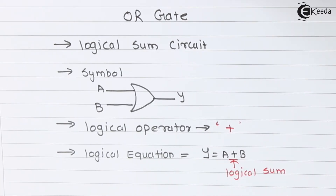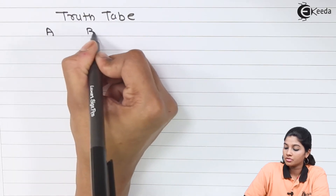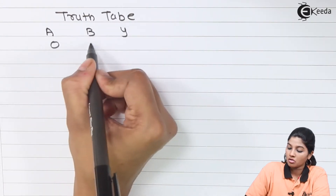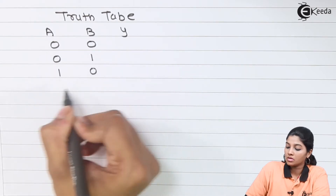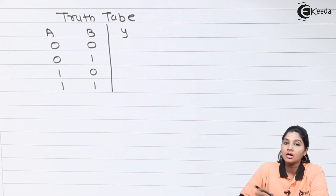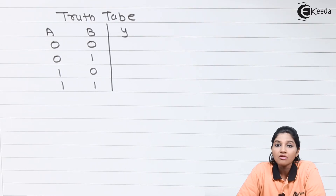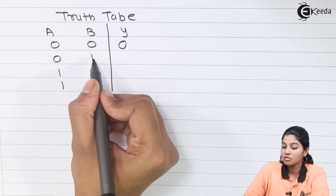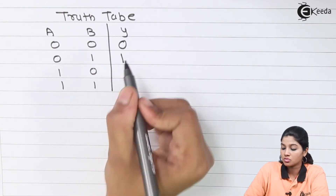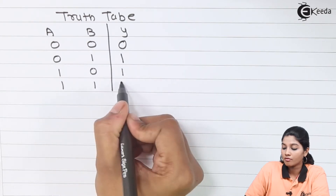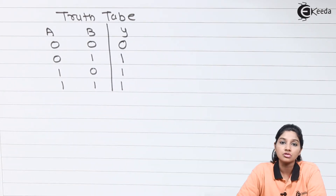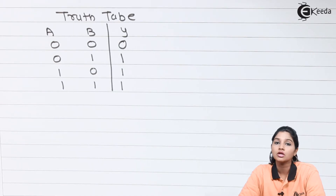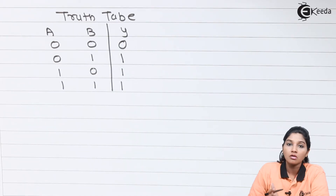As we are using two inputs, the total number of input combinations becomes 2 raised to 2, that means 4. So let's write the truth table with inputs A and B and output Y. The combinations are: 0,0 → 0; 0,1 → 1; 1,0 → 1; 1,1 → 1. In case of OR gate, if any one of the inputs is high then the output goes high.